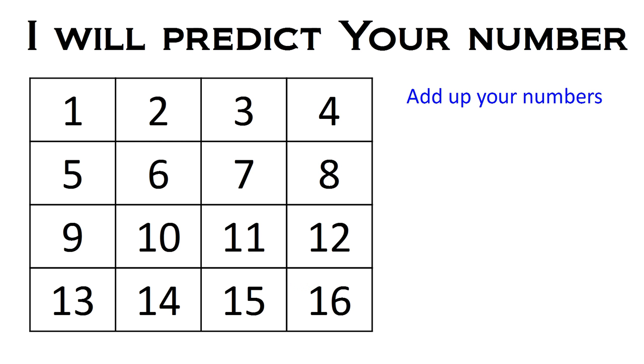But now here comes a prediction. Add up those four numbers you have and here's what my prediction is. My prediction is the sum of your numbers is 34.